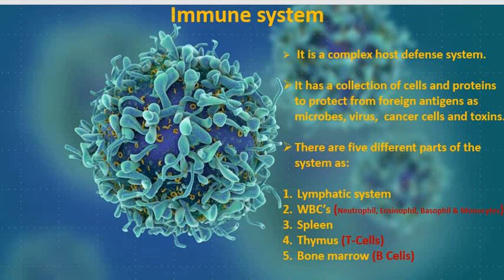The lymphatic system plays an important role in immune surveillance by allowing for the circulation and architecture complex of immune cells and antigens. Immunological surveillance is a monitoring process of the immune system to detect and destroy infected cells in the body.